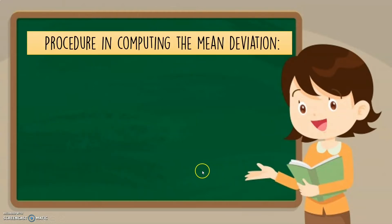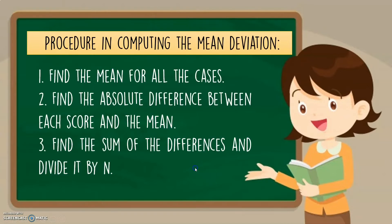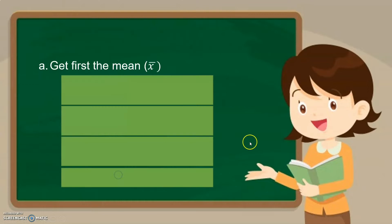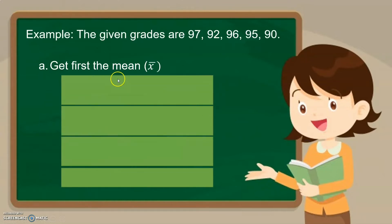The procedure for computing the mean deviation: first, find the mean for all cases; second, find the absolute difference between each score and the mean; third, find the sum of the differences and divide by n. Given the grades 97, 92, 96, 95, and 90, these are individual scores, so we are referring to ungrouped data.